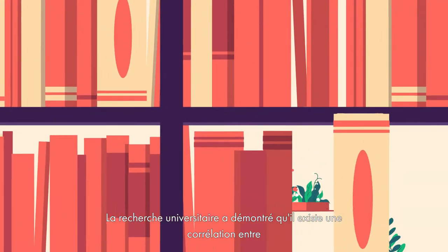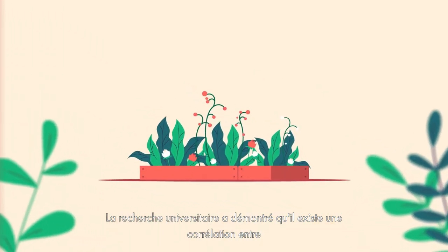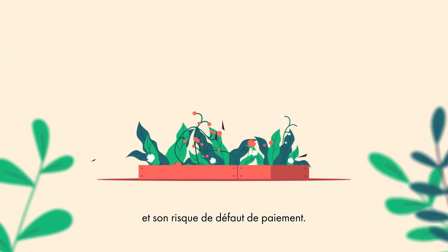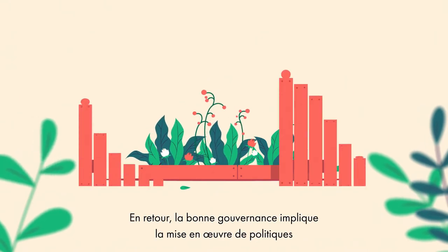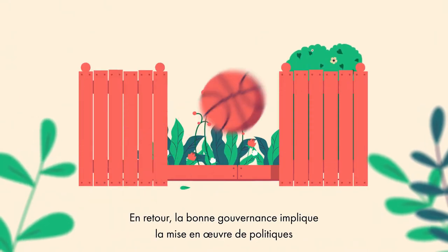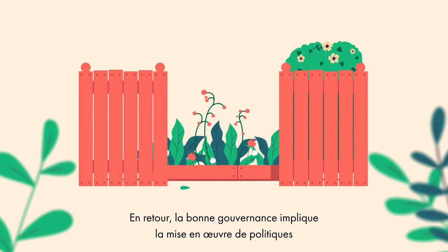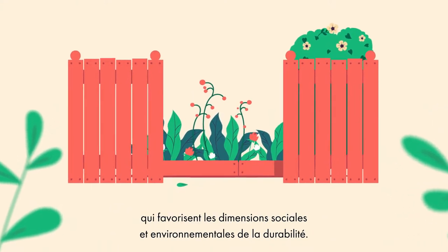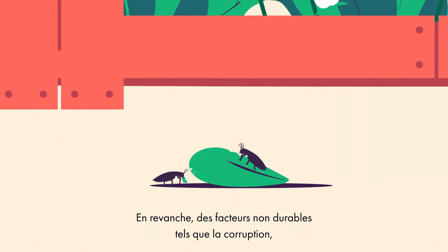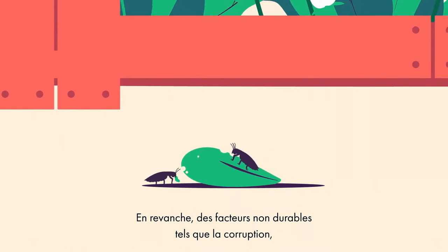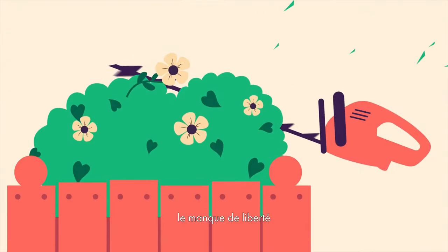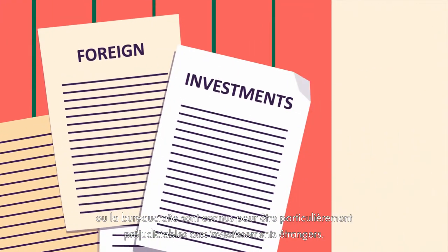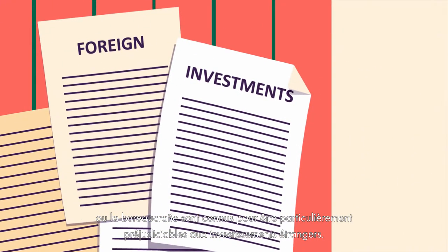Academic research has demonstrated a correlation between the quality of a country's governance institutions and its debt default risk. In turn, good governance underpins the implementation of policies that foster the social and environmental dimensions of sustainability. On the contrary, unsustainable factors such as corruption, lack of freedom, or red tape are known to be detrimental to foreign investments in particular.